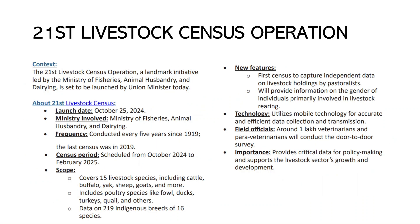Finally, the 21st Livestock Census was launched on October 25th, 2024, by the Ministry of Fisheries, Animal Husbandry and Dairying. It is conducted every five years — the last was in 2019, and it began in 1919. The census period for this 21st edition runs from October 2024 to February 2025. It covers 15 livestock species including cattle, buffalo, yaks, sheep, goats, and poultry.